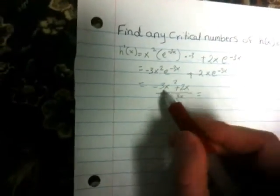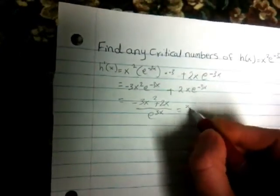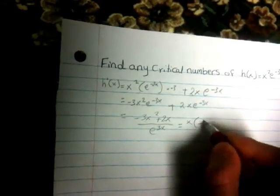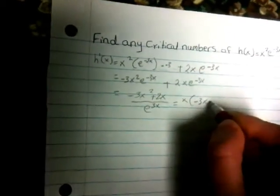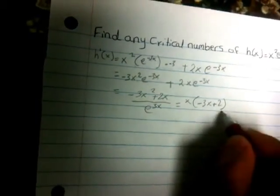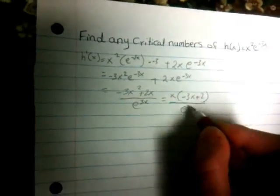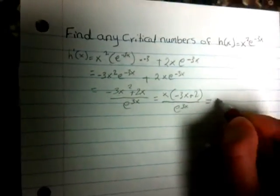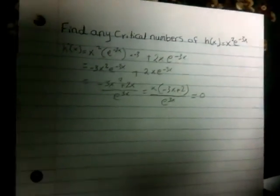Now, we can take x out, so we will take x out. x times (-3x + 2) over e^(3x). We will equal it to 0 to find the critical number.